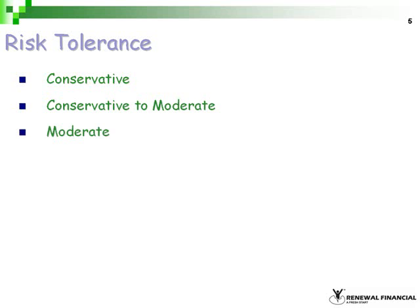In the moderate zone, growth of capital is the primary concern, but a secondary goal is safety of principle. Investors are willing to accept some risk in seeking to increase growth opportunities. In the moderate to aggressive zone, growth of capital is again the primary concern, but a secondary concern is safety of principle. Investors are willing to accept a fair amount of risk to take advantage of potentially significant growth opportunities. Finally, in the aggressive zone, growth of capital is the dominant concern, and investors are willing to accept a high degree of risk in seeking superior returns.